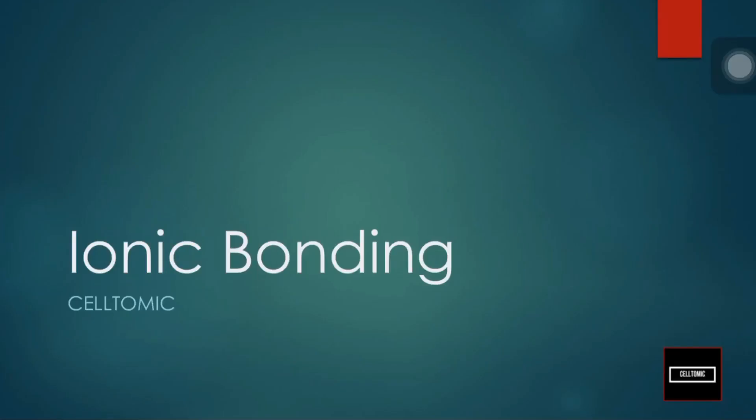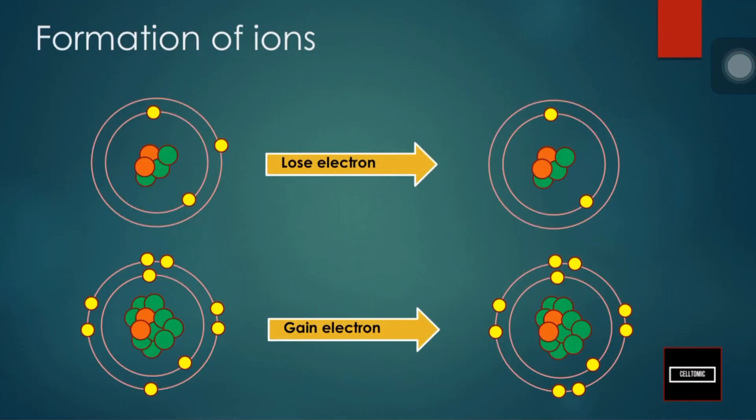Welcome to CELTOMIC. Today's episode will be looking at ionic bonding. In the chapter of atomic structure, we explained how atoms are transformed into ions and why they do so — to obtain the electronic configuration of a noble gas and achieve a full octet structure, meaning they want to have a full valence shell.